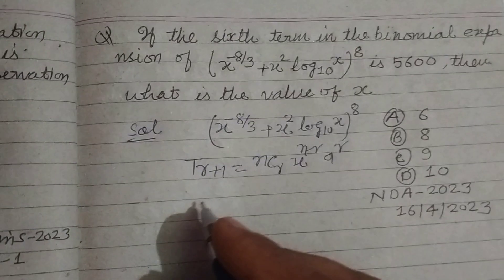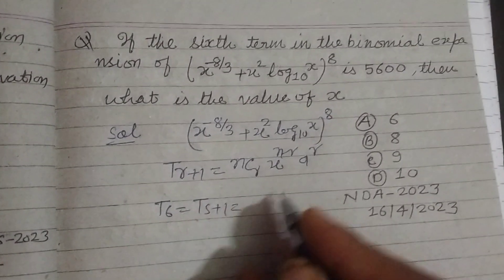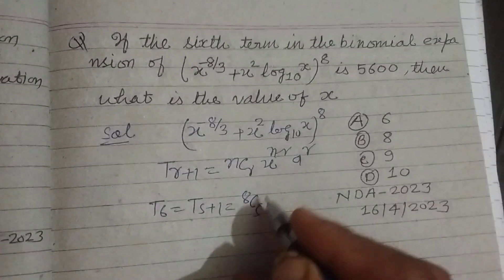So here x is x^(-8/3) and a is x^2 log₁₀(x). So T₆ equals T₅₊₁, n is 8, so 8C5.